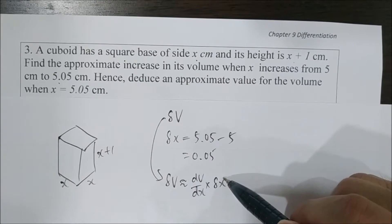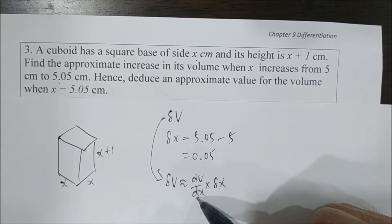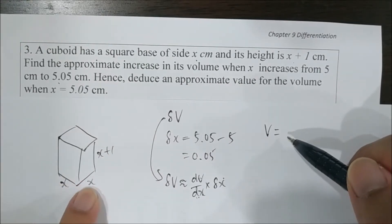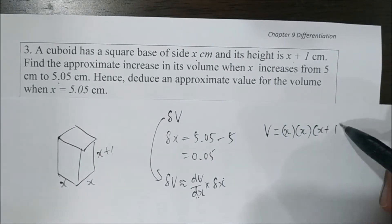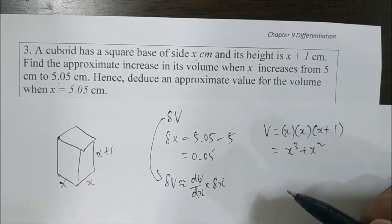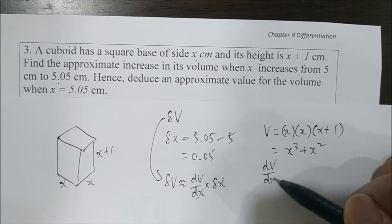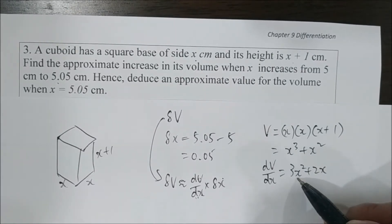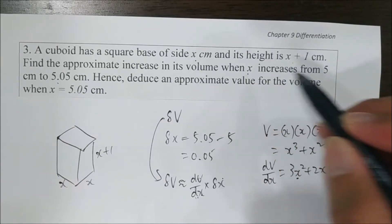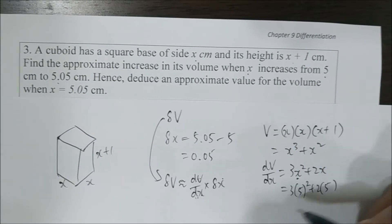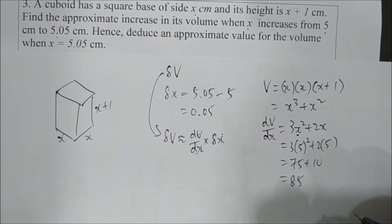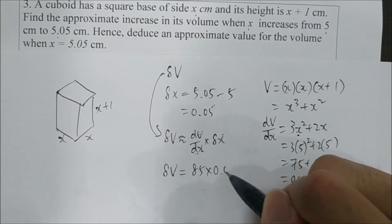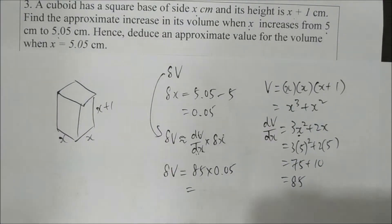To find dv/dx, we first find the relation between v and x: volume equals length times width times height, which gives v equals x squared times (x plus 1). Differentiating v with respect to x gives dv/dx equals 3x squared plus 2x. Substituting x equals 5, we get dv/dx equals 85. Therefore, sigma v equals 85 times 0.05, which is 4.25.